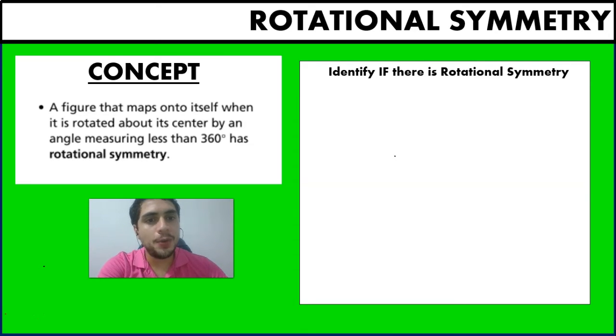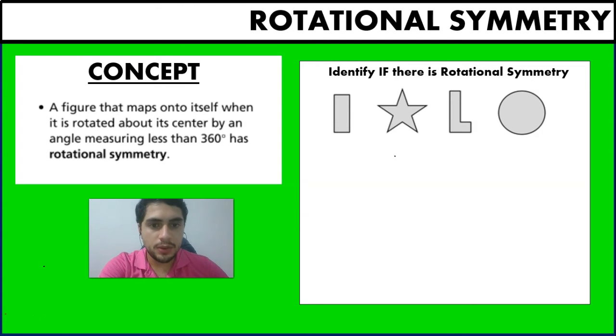Now we're going to take a quick look at some examples of rotational symmetry. So identify if there is rotational symmetry on each one of these images. So on the first one, we have a rectangle.